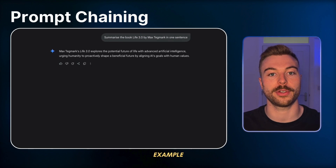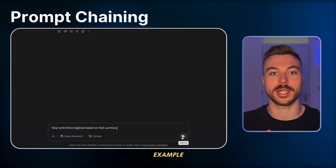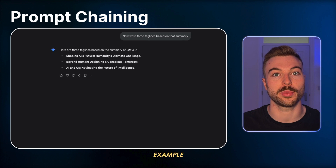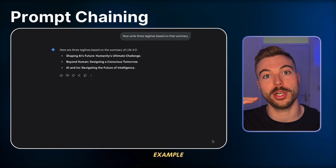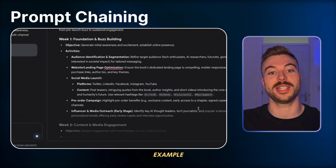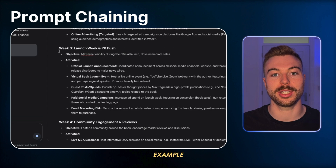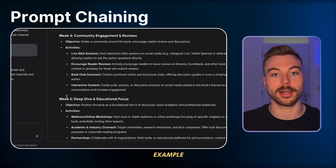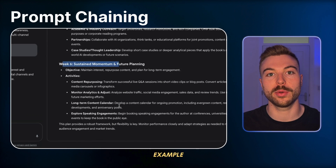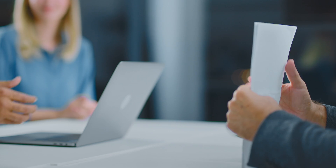That gives us our first output. Next we say 'now write three taglines based on that summary' - we've got the summary first, now we're writing taglines. After that: 'create a six-week marketing plan to promote the book.' By breaking it down into multiple steps, we're guiding the AI through our thinking process, like briefing a team member. We're going one step at a time and getting the output we really want. Try this with job postings, newsletters or course creation - start with that big picture idea and then drill down step by step.